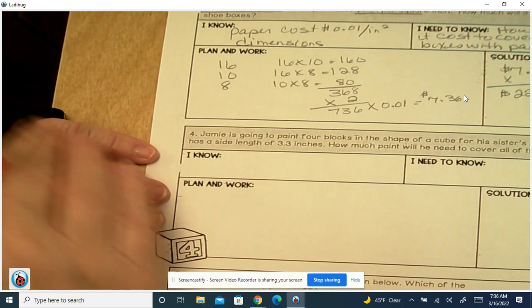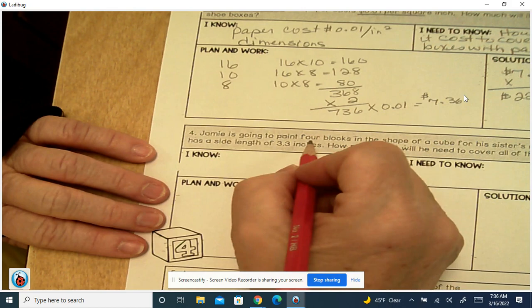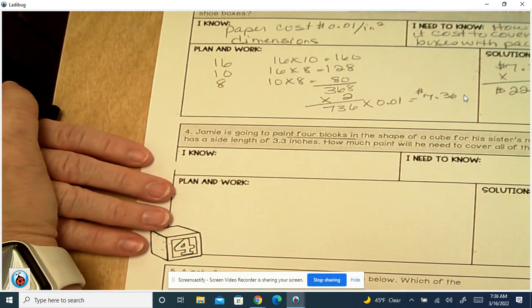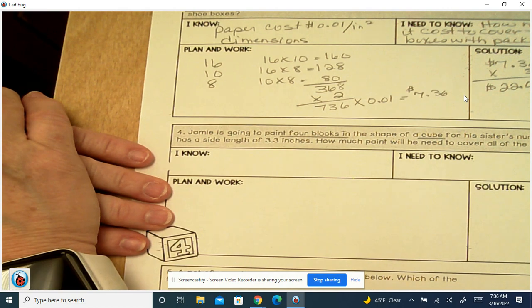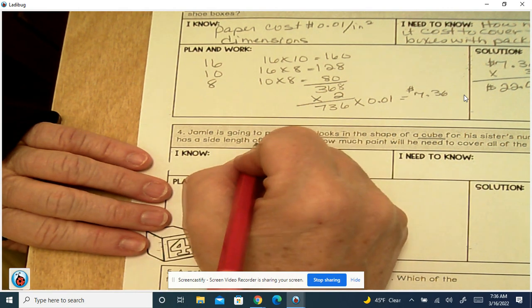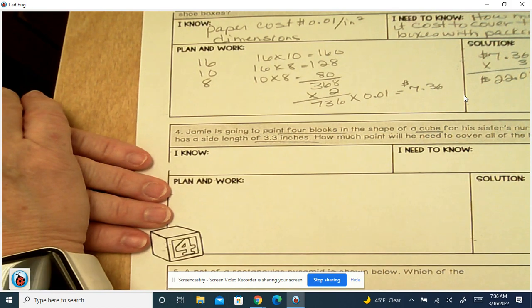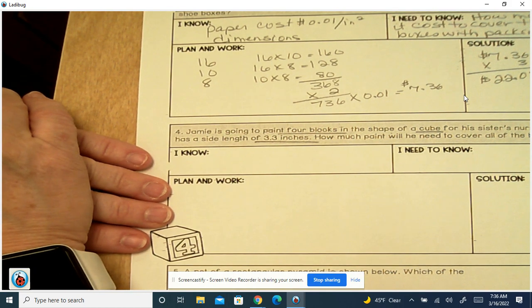Number four. Jamie's going to paint four blocks in the shape of a cube for his sister's nursery. Each cube has a side length of 3.3 inches. How much paint will he need to cover all the blocks?